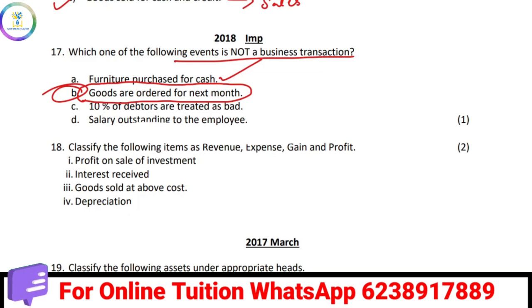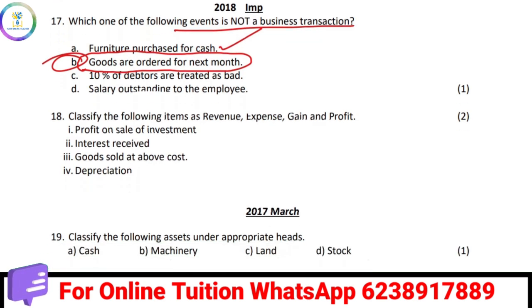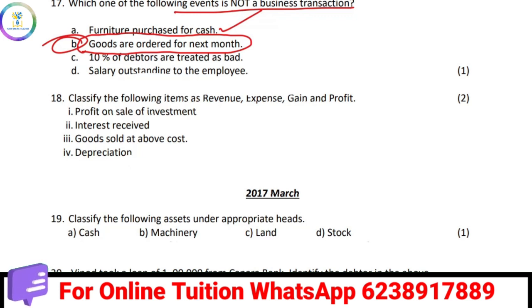Goods ordered for next month. Classify the following items as revenue, expense, gain, and profit. Profit on sale of investment — that is a gain. Interest received is revenue. Goods sold above cost — what is that? Profit.